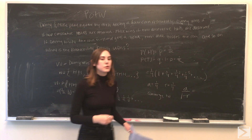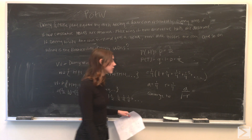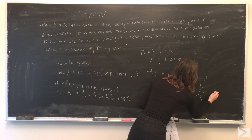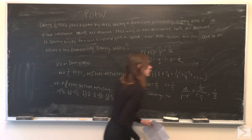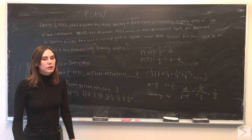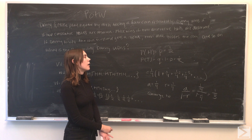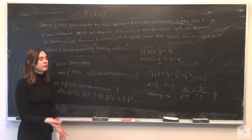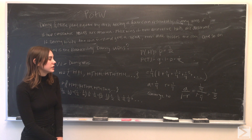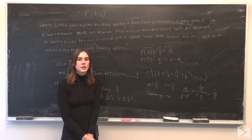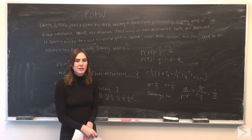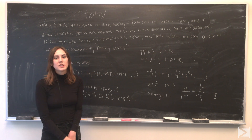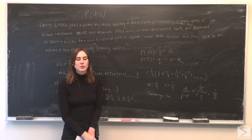The series converges to a over one minus r, which equals one quarter over one minus one quarter, which comes out to be one third. So the probability that Danny wins this game — when he first tosses and gets a head — is equal to one third. That's all we have for this week's Problem of the Week. I hope you enjoyed the video; please check out more of our videos on YouTube, Facebook, and Twitter. Thank you.